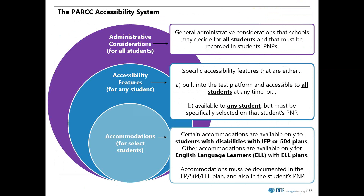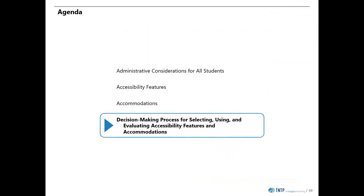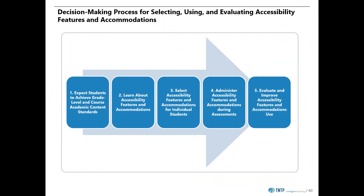In sum, the range of features in the PARCC accessibility system should empower you to provide the optimal testing environment for every student and allow each student to put his or her best foot forward. How do you know which accessibility features and accommodations to select for your student? PARCC outlines a five-step process for putting all of the pieces together around accessibility features and accommodations. You can find more information on page 50 of the PARCC manual.